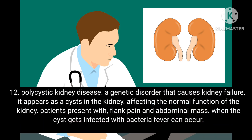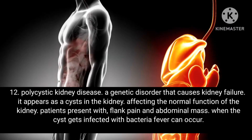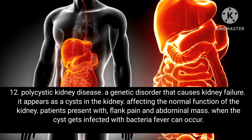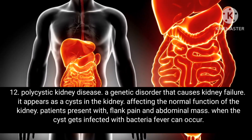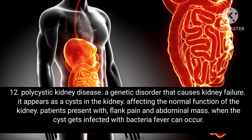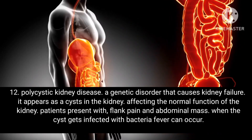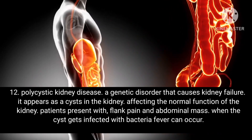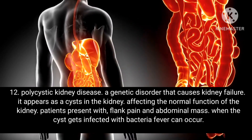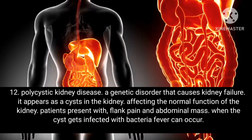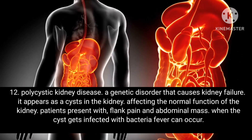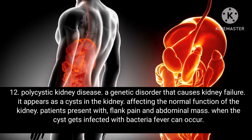Twelfth, polycystic kidney disease — a genetic disorder that causes kidney failure. It appears as cysts in the kidney, affecting normal function. Patients present with flank pain and abdominal mass. When the cysts become infected with bacteria, fever can occur.